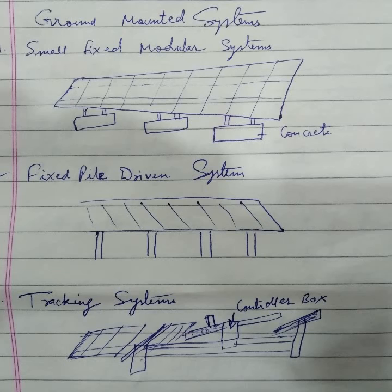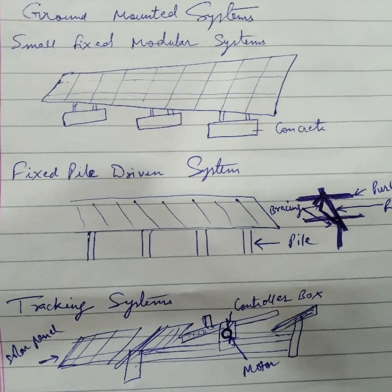After this formula, next: ground mount systems are of three types. First one is the small fixed modular systems. In that, concrete is there, structure is there, solar panel is there—you see in this diagram.